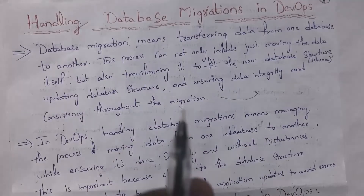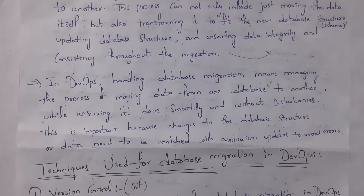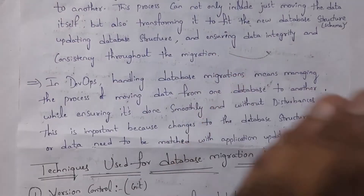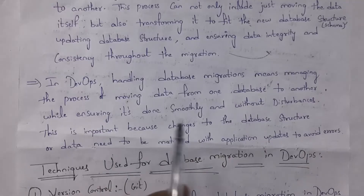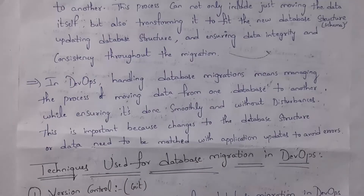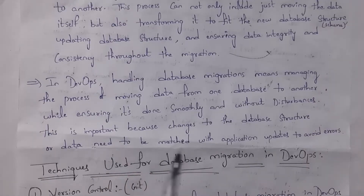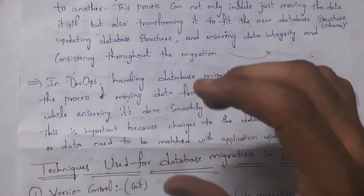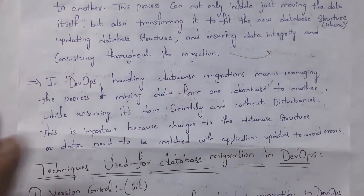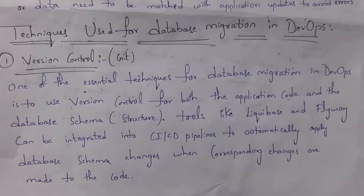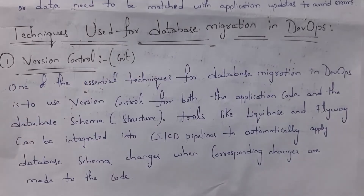In DevOps, handling database migration means managing the process of moving data from one database to another while ensuring it is done smoothly without any disturbance. This is important because changes to the database structure or data need to be matched with application updates to avoid errors. Whenever you update a database, the update must not affect the application negatively. In DevOps, we use various techniques to perform database migration. The first technique is version control — that is, Git software. Whenever you develop any application, you need to store both the application code and the database code in Git.